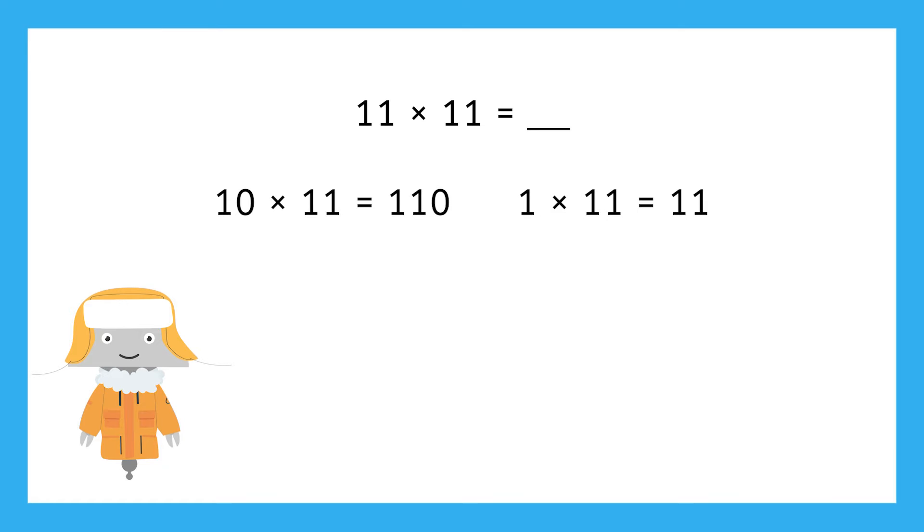Now, what can we do with these products to help us get the answer to 11 times 11? We can add them together. 110 plus 11 equals 121. Which means 11 times 11 equals 121.